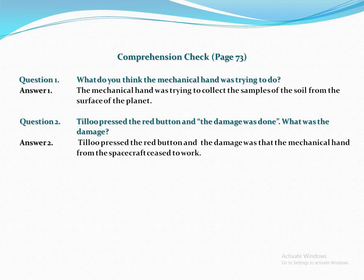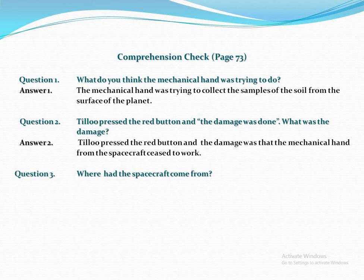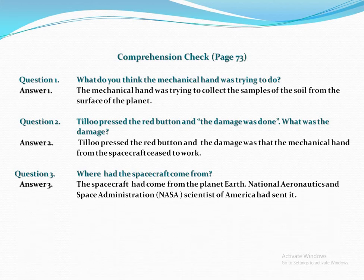The third question of this comprehension check is: Where had the spacecraft come from? The answer is: The spacecraft had come from the planet Earth. Scientists from NASA — National Aeronautics and Space Administration — of America had sent it.